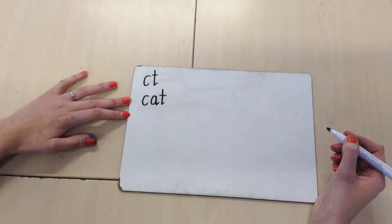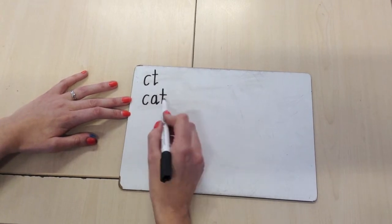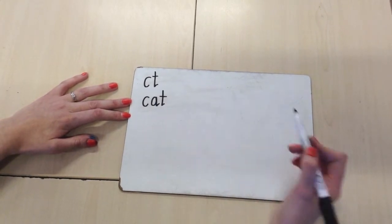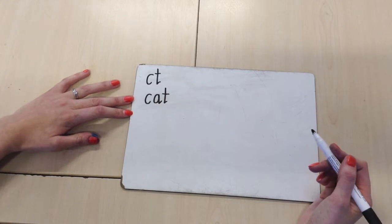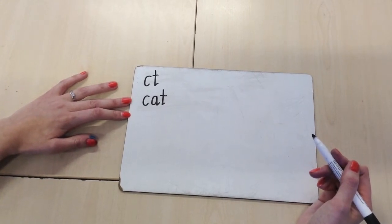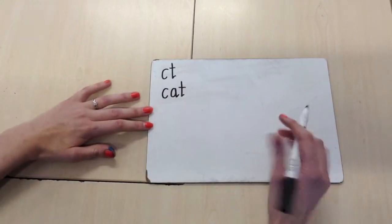Once they become confident at writing what we call CVC words, these are three-letter words with a vowel in the middle, they can start to write longer words. So for example, the word strawberry. You'd ask them to sound it out.